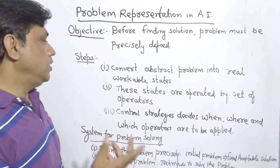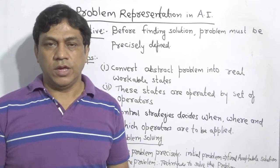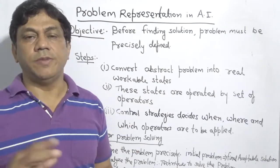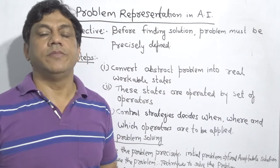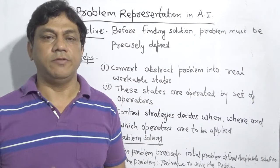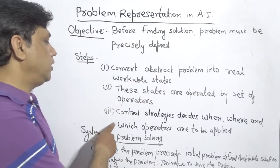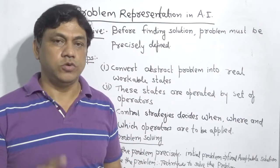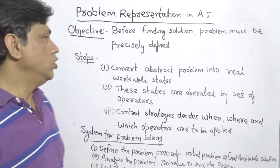Second, these states are operated by a set of operators, meaning these states can be represented mathematically. After specifying the state in a mathematical way, the third step involves control strategies. In AI there are many different control strategies, such as breadth first, depth first, and hill climbing. These control strategies decide when, where, and which operators are to be applied. AI uses these control strategies to work on different states and finally arrive at the answer.